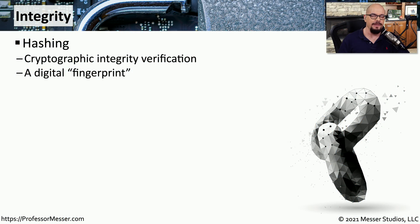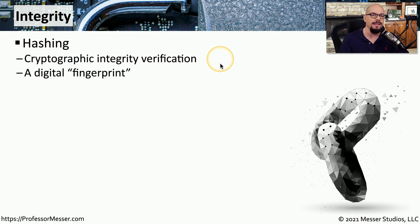When you're collecting data for evidence, you want to be sure that nothing is going to change with the information that you've collected. One way to ensure this is to create a hash of that data. This is a way to cryptographically verify that what you have collected is going to be exactly the same as what you're examining later. You can think of this as a digital fingerprint. You would create that hash when you first collect the data, and then verify that hash whenever you perform the analysis to make sure nothing has changed in the meantime.